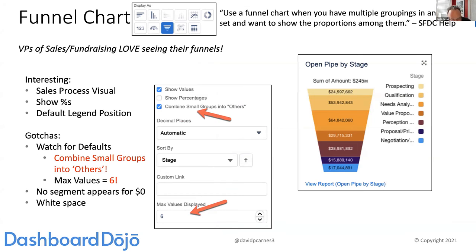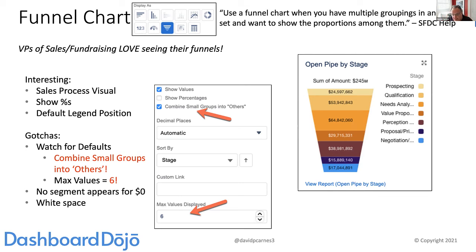We just have three more types of charts and we'll wrap up for today. The funnel chart was so popular when it was added. You can use a funnel chart when you have multiple groupings in an ordered set — sales stages is the perfect example. You can visualize your sales process, show the percentages and values. Please be careful when creating funnel charts: the default combines small groups into others. If you're tracking a sales process and have just a small amount in the contract stage and prospecting stage, you don't want those combined. Most of us have more than six stages, so the default max of six is also limiting.